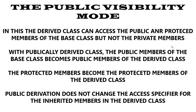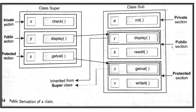Now first we will see public visibility mode. We can only access the protected members and public members of the base class — we cannot access the private members. In public derivation, the public members of the base class will become public members of the derived class, and the protected members of the base class will become protected members of the new class. So in public derivation, there is no change in the access specifiers for the inherited members.